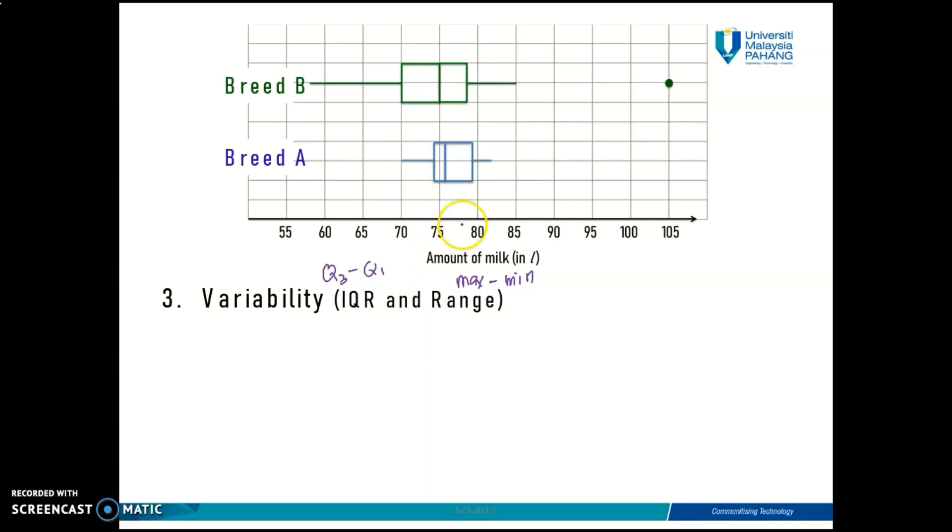So let's look at the range here, maximum to minimum. In a boxplot, you can see range by looking at the line from your minimum value until your maximum value. This is your range.